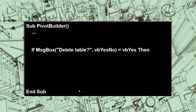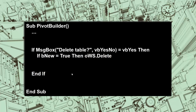At the end we ask: do you want to delete the table? Yes or no. If they say yes, it depends on what we have to delete. If B New is true, that means we put it on a separate sheet, so we just delete that new active sheet.